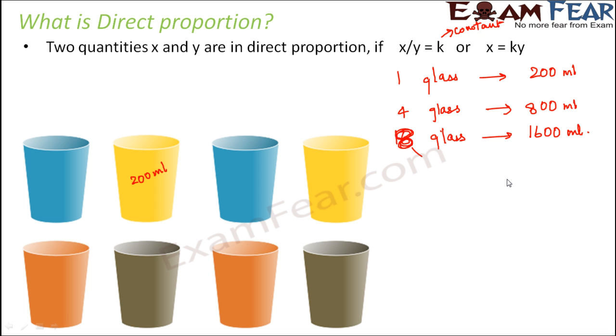So what is happening? As the number of glasses increases, the capacity also increases. So number of glasses and capacity, they are directly proportional. If you look at it, the ratio of the number of glasses to the capacity is always constant. In the first case, the ratio is 1 is to 200. In the second case, the ratio is 4 by 800, which is again equal to 1 is to 200. In the third case, the ratio is 8 by 1600, which is also equal to 1 is to 200. So the ratio of x and y is always constant and therefore x and y are said to be in direct proportion. Here x and y are nothing but the number of glasses and the capacities respectively.